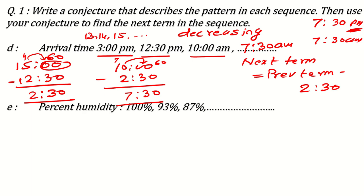Now, next is percent humidity. It is 100%, 93%, 87%. So again, it is in decreasing order. Now, what you can see here? From 100 to 93, it is minus 7. From 93 to 87, minus 7. So what conjecture here we are following? Every term is decreased by 7 than the previous term. So if you subtract 7 from 87, then what you will get? 80%. So what will be the next term? Next term will be 80%.